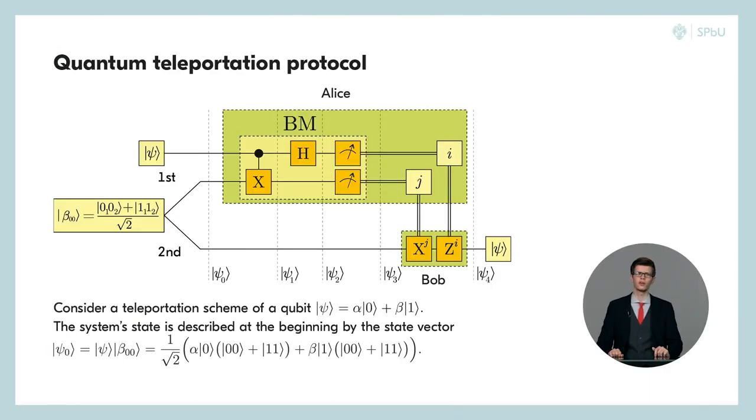The schema for quantum teleportation of a qubit in unknown state psi from Alice to Bob is presented on the slide. As we know, the state psi can be represented by a superposition of basis states 0 and 1 with certain coefficients alpha and beta. In the beginning, the total state psi 0 of three qubits is the standard product of the state psi and the Bell state beta 0 0.